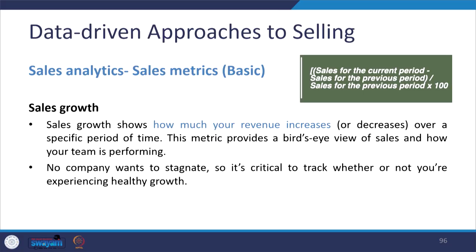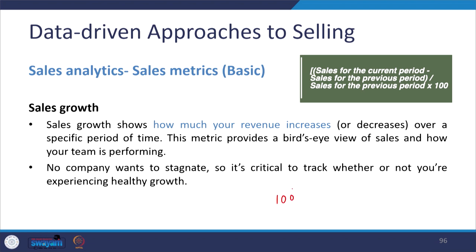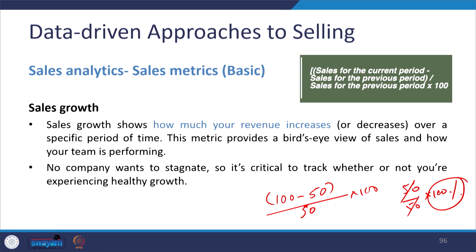Sales growth is the first and simplest sales metric. It shows how much your revenue increases or decreases over a specific period. It provides a bird's-eye view of how your team is performing — every company wants to grow, so it is critical to track whether you are experiencing healthy growth or becoming stagnant. The formula is: (sales for current period minus sales for previous period) divided by sales for previous period, multiplied by 100.